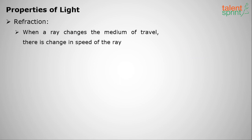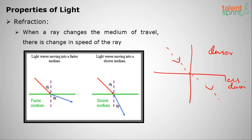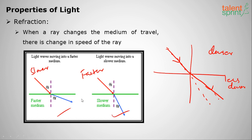The next property is refraction. Whenever there is a change in medium, there is a change in speed. If light moves from a slower medium to a faster medium, it bends away from the normal; if it moves from a faster to a slower medium, it bends towards the normal. This bending is called refraction, and it occurs whenever there is a change in medium — air to solid, solid to gas, liquid to gas, and so on.